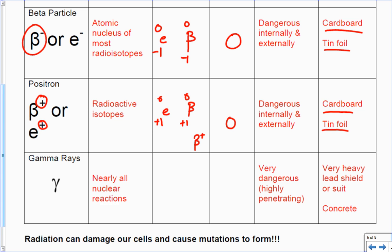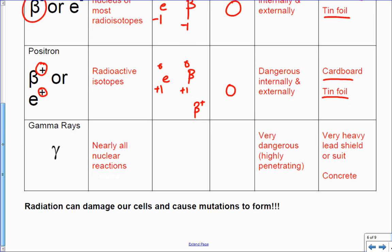And now we get to the granddaddy of them all, the gamma ray. Nearly all nuclear reactions produce gamma radiation. This is the thing that Geiger counter is looking for. It's got the silly little γ thing with a 0 and a 0. Gamma radiation is basically just a wave. It is super very dangerous and highly penetrating. You need that lead shield or concrete, and a lot of concrete, to keep it from getting through. This has got the most energy, the most dangerous. Remember, radiation can damage our cells and cause abnormalities and cancer.